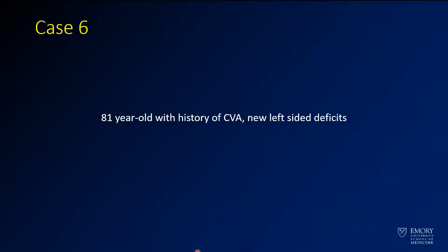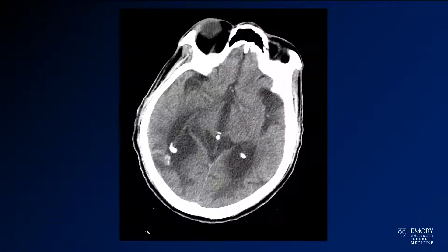For K6, we have an 81-year-old man with a history of stroke or CVA and with new deficits. Here we see brain CT with multiple areas of hypodensity. We've got big ventricles, big Sylvian fissures, so we know there's some volume loss, but then we see some area of hyperintensity that's concerning for hemorrhage.